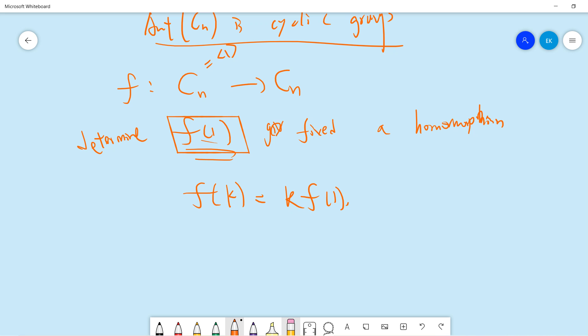The proof is easy. We are assuming this is an isomorphism. The key is that if it is isomorphic, then f(1) is also a generator.